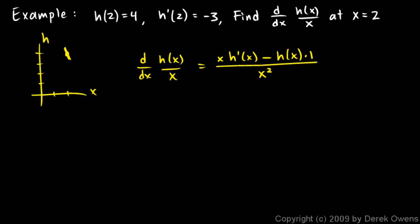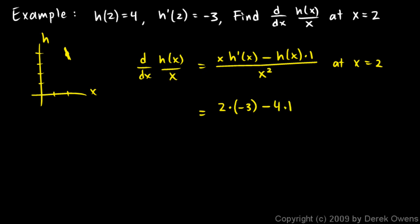Now I can put in numbers here. I'm told to find this derivative at x equals 2. So I can put in 2 for x here and here. h prime of x will be h prime of 2, and I'm given that. And h of x will be h of 2, and I'm given that. So: x is 2, h prime of x is negative 3, so 2 times negative 3, minus h of x — and h of 2 is 4 — minus 4 times 1 over x squared, and x is 2.